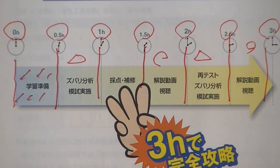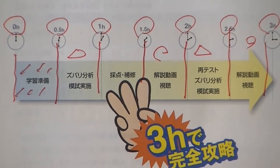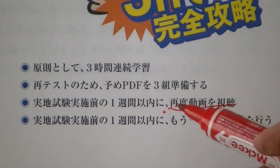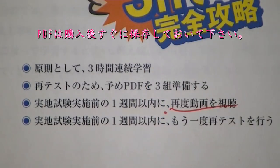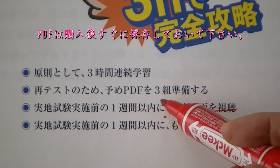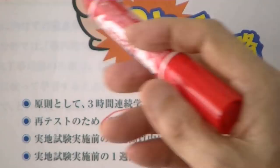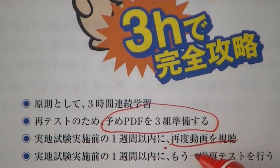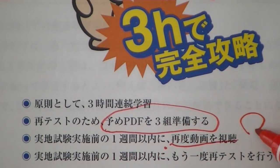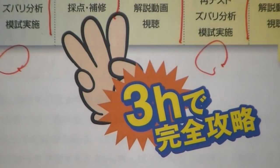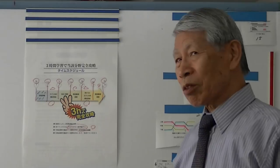そこでもう一回同じテストをやってください。再テストです。そうして念のためにもう一回動画を見る。動画を2回、試験を2回行う、ここがポイントです。それだけで終わっちゃいけない。実は試験の1週間くらい前になると、もう一回自分で再度この試験を行って動画を見てください。合計3組のPDFを用意しておいて繰り返しやっていけば、この分野についてはゲットできます。